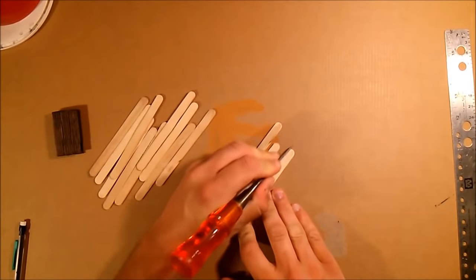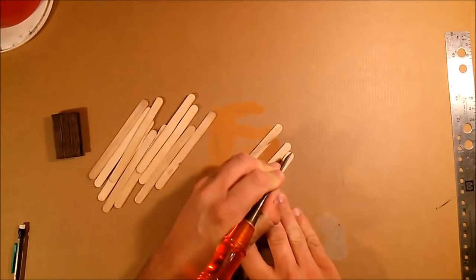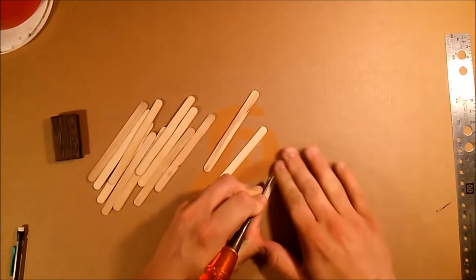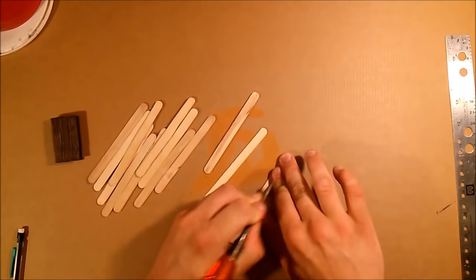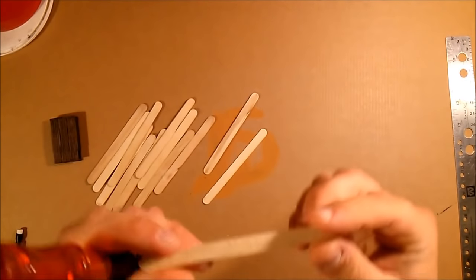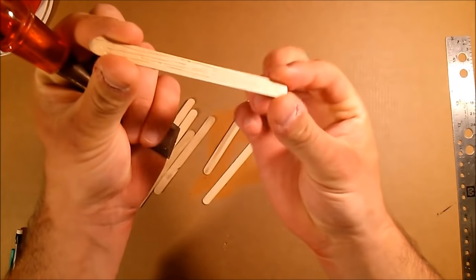First thing we'll do is take three popsicle sticks and a chisel, or a screwdriver, or anything with a tough corner. With a lot of effort, draw it across the popsicle stick in order to carve a groove. This will give it a wood-like texture.